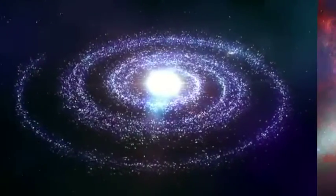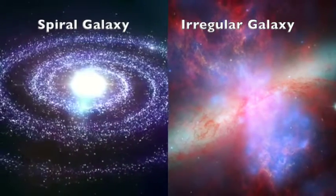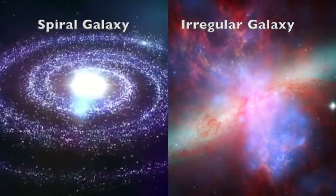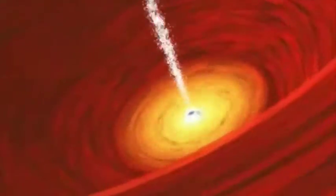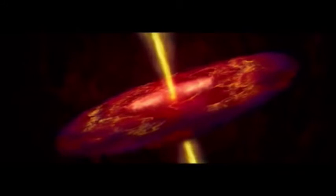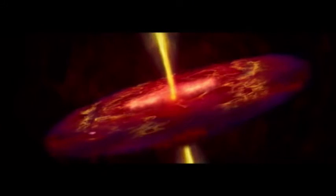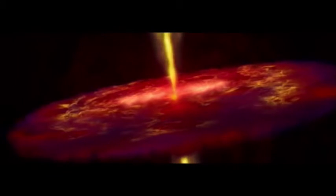Seyfert galaxies are spiral or irregular galaxies that have an extremely bright nucleus. Astronomers think that the bright nucleus is most likely caused by a supermassive black hole at their centre, surrounded by an accretion disk, which is basically a disk of matter that surrounds the black hole. Sometimes this nucleus outshines the surrounding galaxy matter.